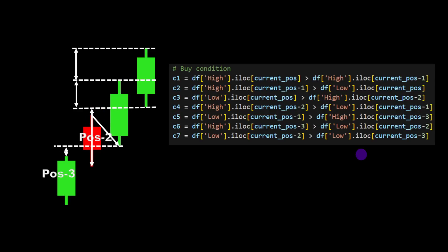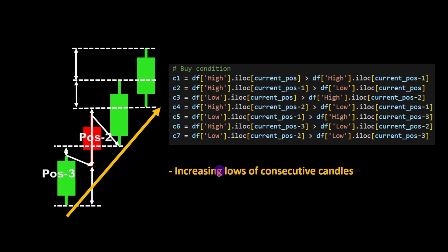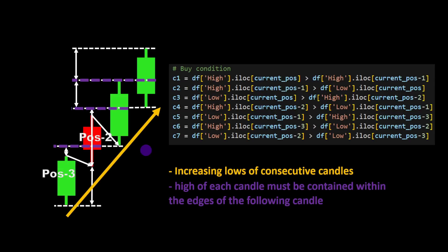The low of position minus one is greater than the high of position minus three, and the high of position minus three is greater than the low of position minus two — so the high of position minus three is in the middle between the edges of the following candle at position minus two. Also, the low of position minus two is greater than the low of position minus three. We are essentially looking for increasing lows on consecutive candles, where the high of each candle is contained within the edges of the following candle.